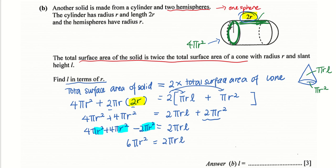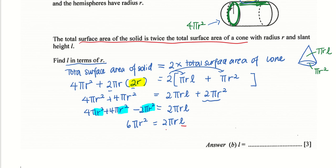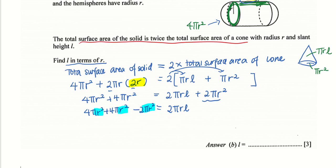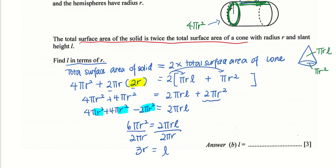To find l, I divide both sides by 2 pi r. The 6 divided by 2 is 3; pi cancels; r squared divided by r leaves r. So l equals 3r. So l in terms of r: l equals 3r.